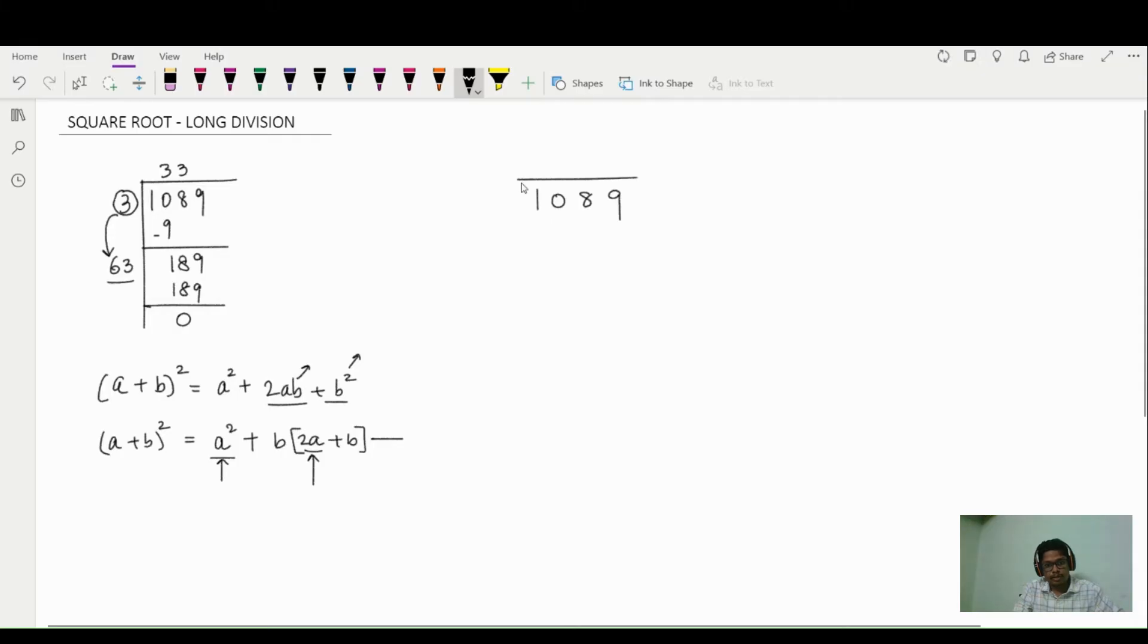So I'll write 1089. Before starting this method, we already know that 1089 is 33². So I'll write 33² here, which equals 1089. Now I convert this 33² into (a + b) form, that is (30 + 3)². When you expand, you get 30² + 2(30)(3) + 3². That is a² + 2ab + b².